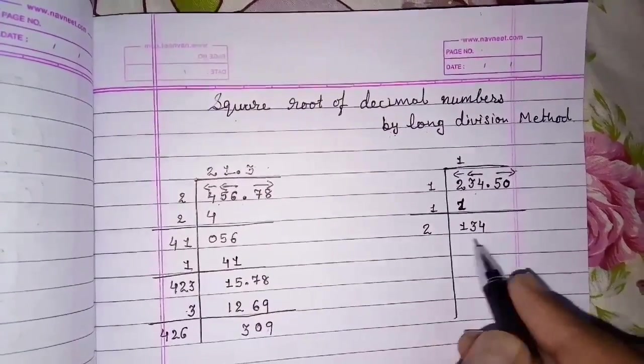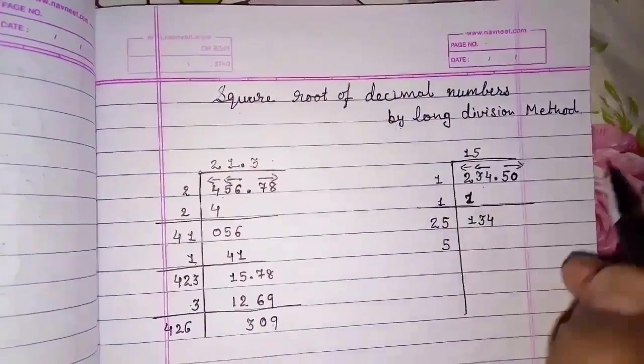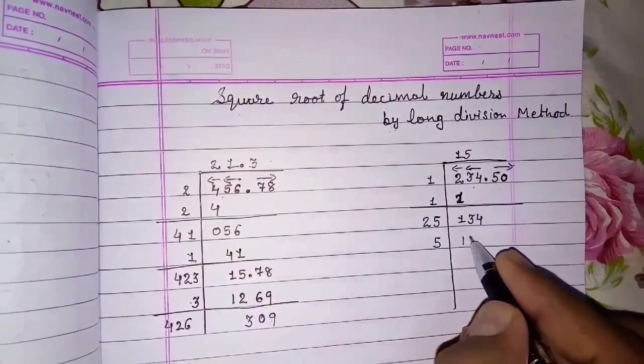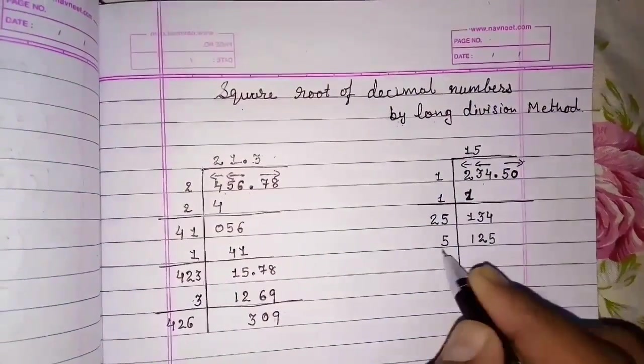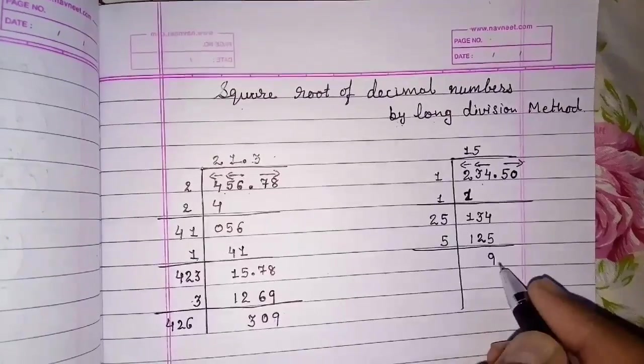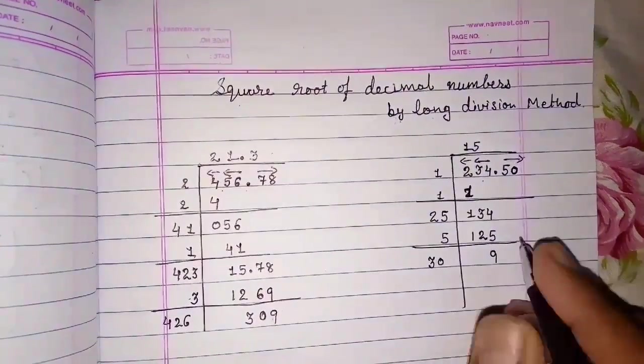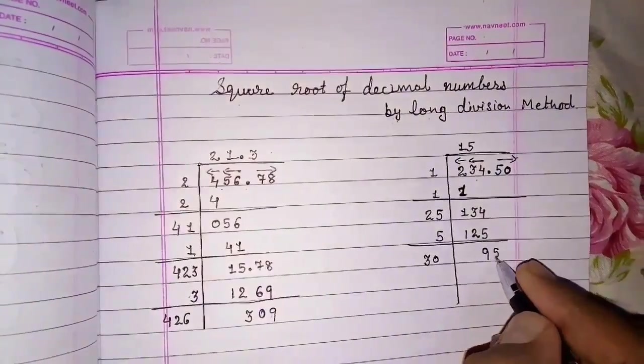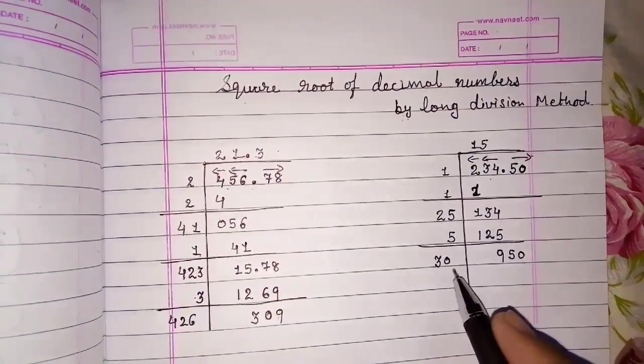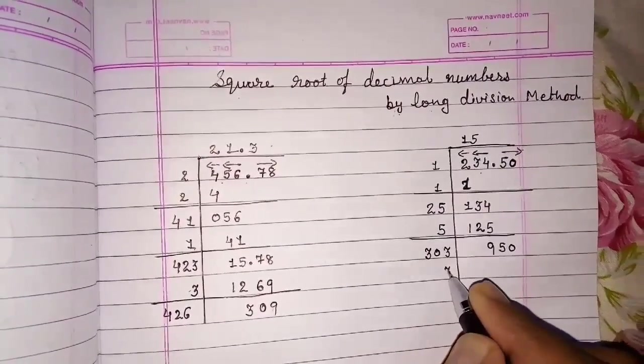And 26 will be greater than 6. So we are taking 25 into 5. And 1, 25. Subtraction. 9. Okay. And here 30. So 9, 5, 0. 3, 3's are 9. I think 8 will be okay. 3. We will take 3 into 3.